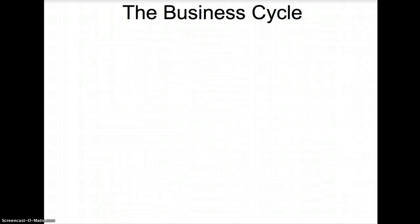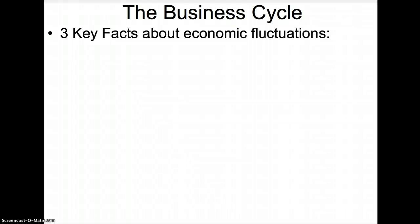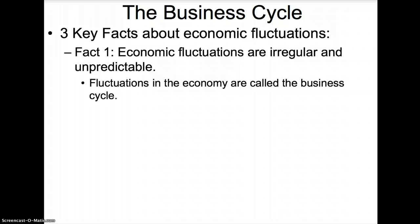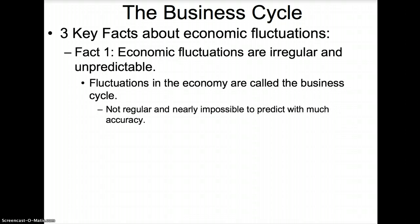The business cycle: the economy is always changing, with periods of boom and periods of bust. It is important to understand three key facts about all economic fluctuations. Fact 1: economic fluctuations are irregular and unpredictable. The economy can experience long periods of prosperity followed by a short downturn, or a short period of expansion followed by a huge bust. These fluctuations are called the business cycle, and they are nearly impossible to predict with much accuracy.